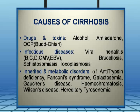Causes of cirrhosis have been classified as drugs and toxins, infectious diseases, and inherited and metabolic disorders under broad headings. Under drugs and toxins: all over the world alcohol is implicated for cirrhosis, and amiodarone, an antiarrhythmic agent, and OC pills used by women all over the world are also implicated.